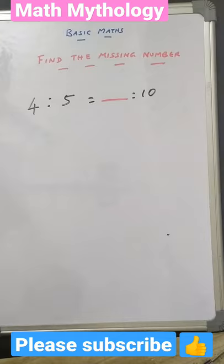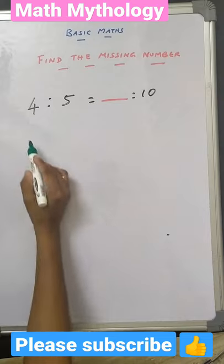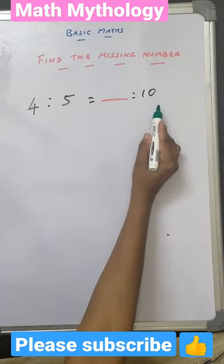Hi students, welcome to Math Mythology. Today we are going to find the missing number in the ratio 4 is to 5 equal to dash is to 10.